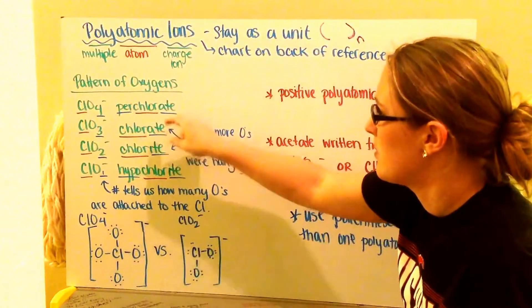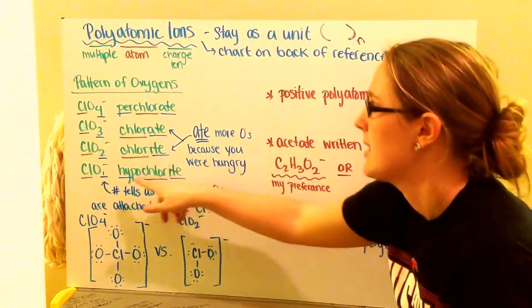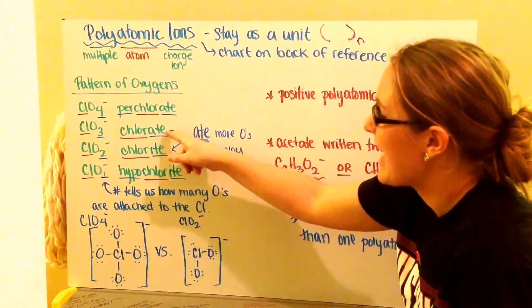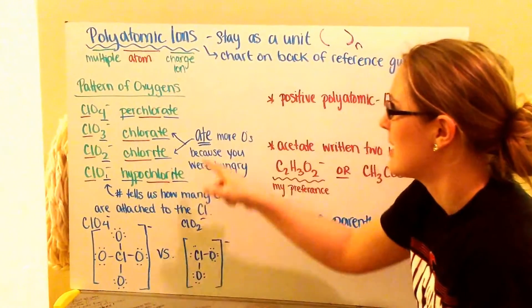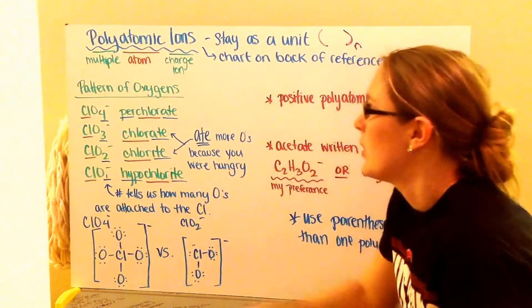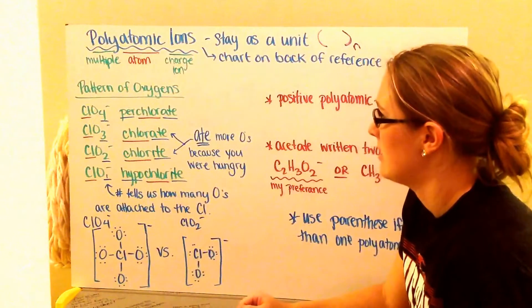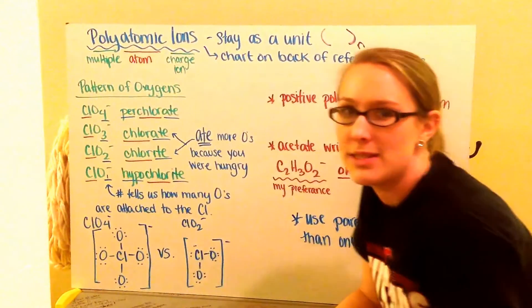One way to remember the endings of these, like perchlorate, chlorate, chlorite, hypochlorite, is my -ates, I'm going to have more oxygens on my -ates because you ate more oxygens because you were hungry. -Ates have more. Whereas -ites are on the lesser end. So different polyatomic ions can follow the same pattern.